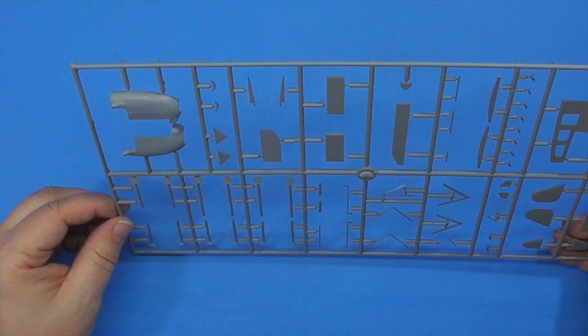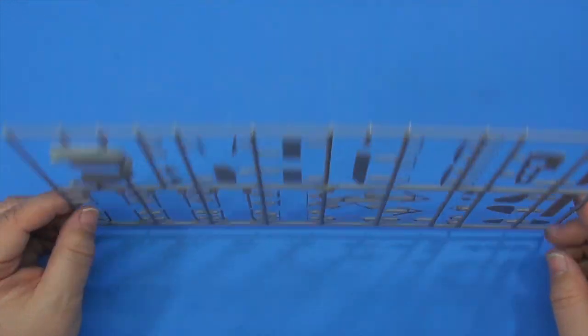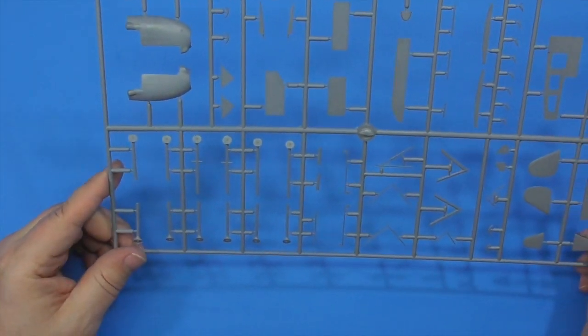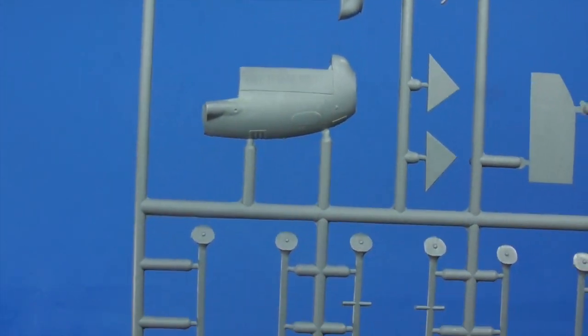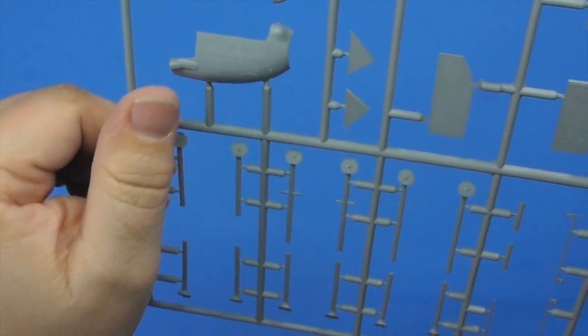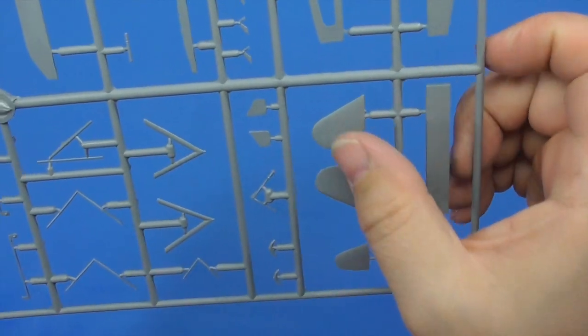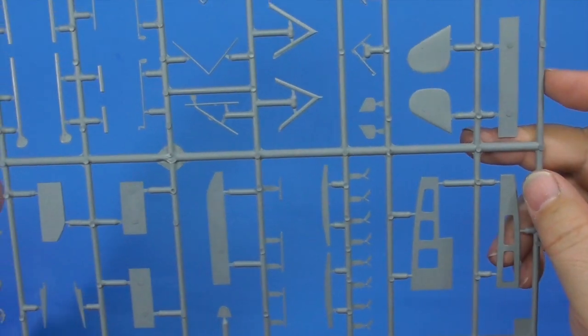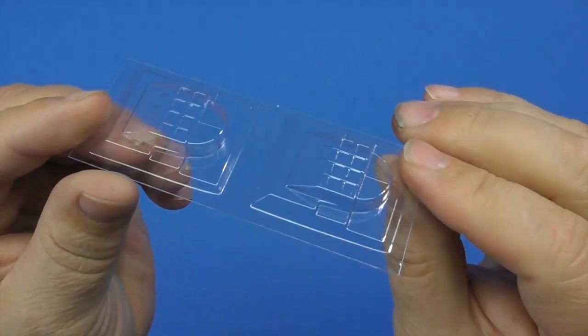And the final sprue of regular parts. Antennas, some panels for the cockpit, some more strut work, a walkway. So again, nice detail. I'm assuming this is the back of the engine. Good detail on all these parts. I just found this, a vacuum form part for something. We shall find out.